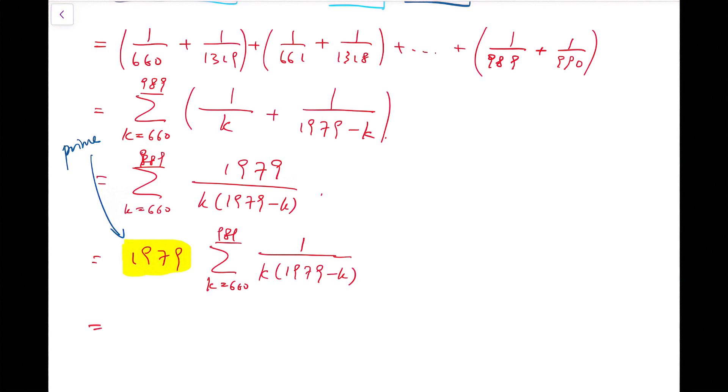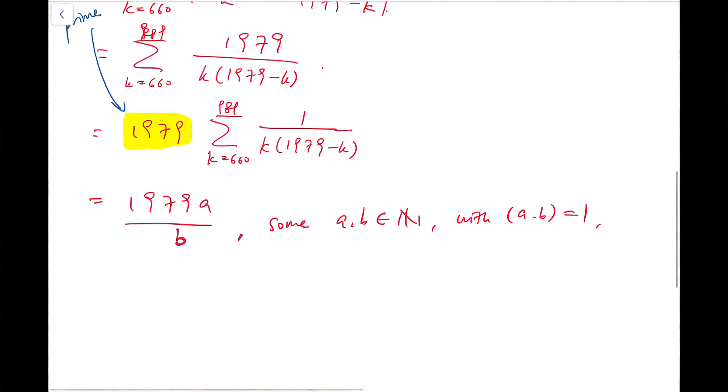So when I add the fractions, I have a very large denominator, I have a very large numerator. Say, I'm going to get the fraction a over b, some natural numbers a and b that are coprime. I can tell that 1979 does not divide b.